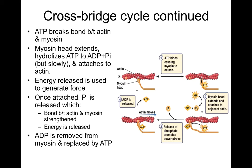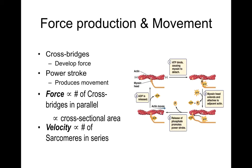Once the myosin head is attached, the phosphate is released as the actin-myosin bond is strengthened and energy is released; the ADP is removed and replaced by ATP. It's the cross bridges that develop force, and the power stroke is what produces movement. Force is proportional to the number of cross bridges in parallel — proportional to the cross-sectional area of the muscle. Velocity of movement is proportional to the number of sarcomeres in series, since a longer muscle fiber, once contracted, will shorten much more.